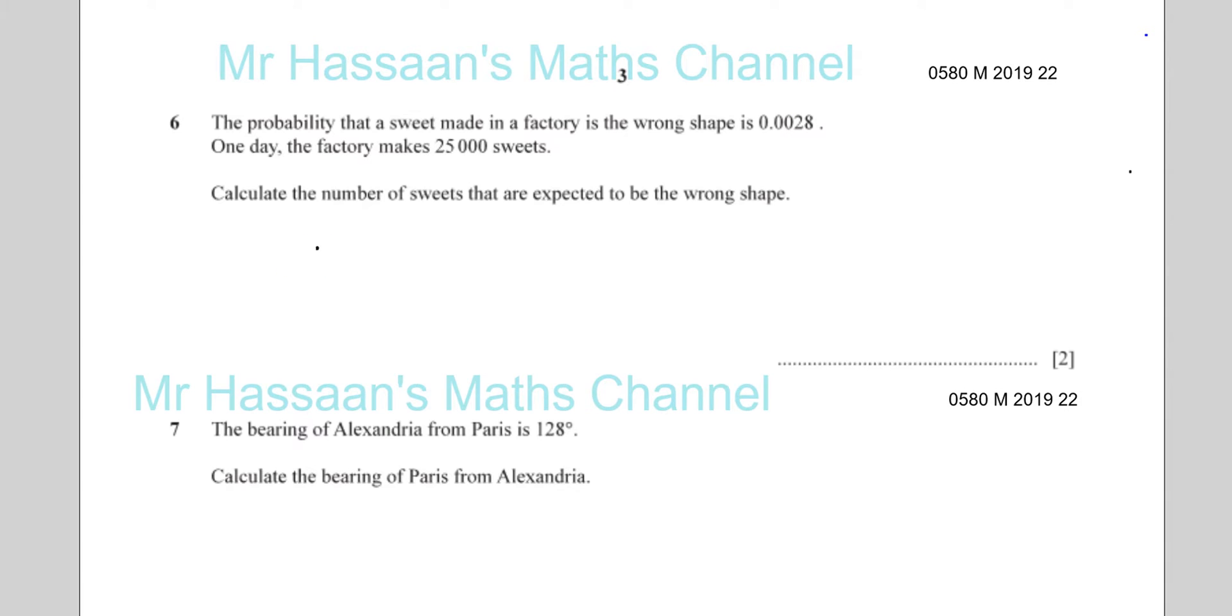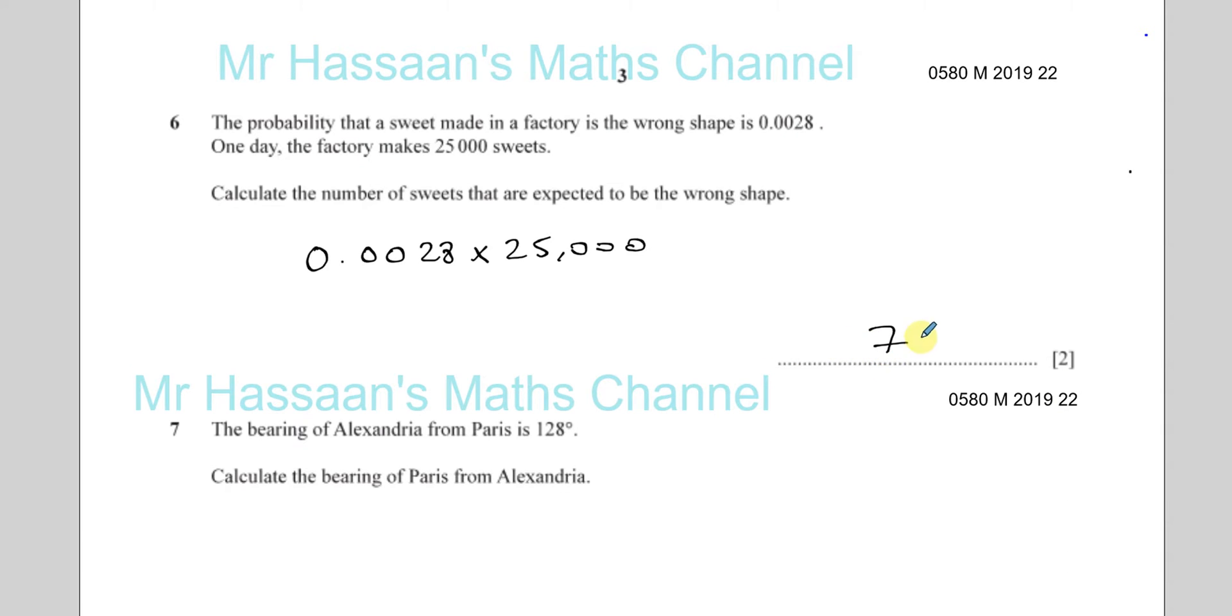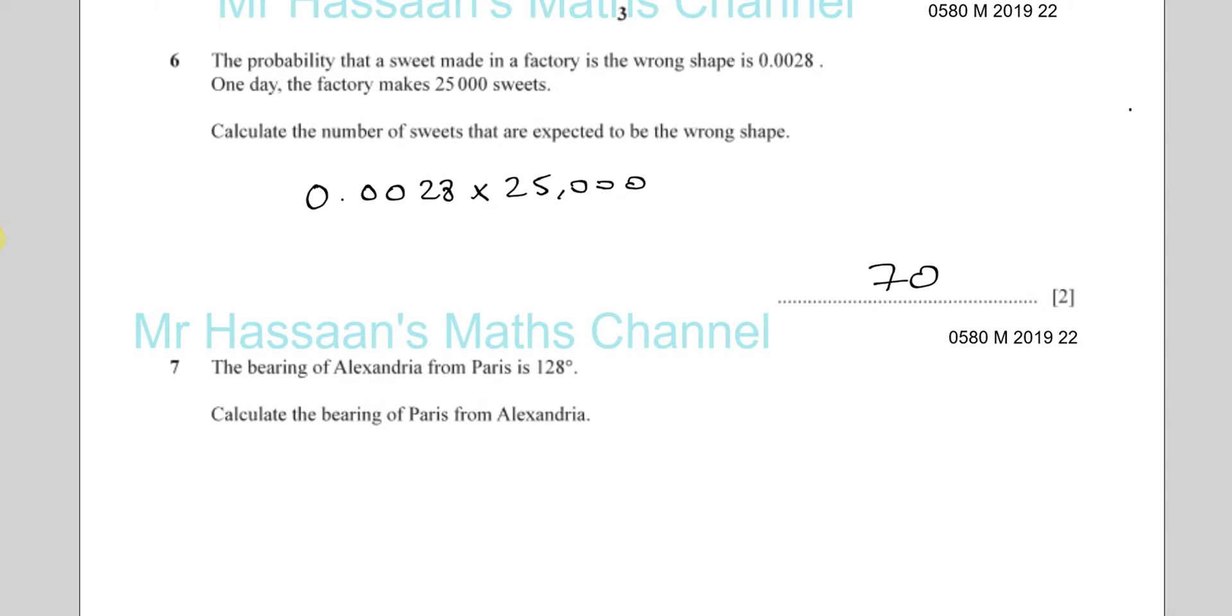One day the factory makes 25,000 sweets. Calculate the number of sweets that are expected to be the wrong shape. So the probability that the sweets are in the wrong shape is 0.0028. If you multiply that probability by the total number of sweets, the probability is like the proportion of sweets which are the wrong shape. So we take our 25,000 and multiply it by 0.0028, which gives us 70. So there's 70 sweets that are expected to be the wrong shape.